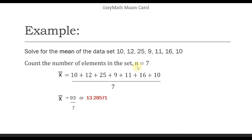Therefore, ilalagay niya yun sa kanyang memory that n is equal to 7. And then it computes for the mean. Ang ginagawa niya ay ina-add niya lahat yung elements: 10 plus 12 plus 25 plus 9 plus 11 plus 16 plus 10. Yung lahat na to na plus — yun yung kanina na sigma notation, repeated addition. Kung ano man yung maging total niyan, which is 93, i-divide niya yun ng 7, kasi yun yung n natin. And the answer is going to be 13.28571 — and that is the mean of the data set. Isang number lang — it represents the middle.